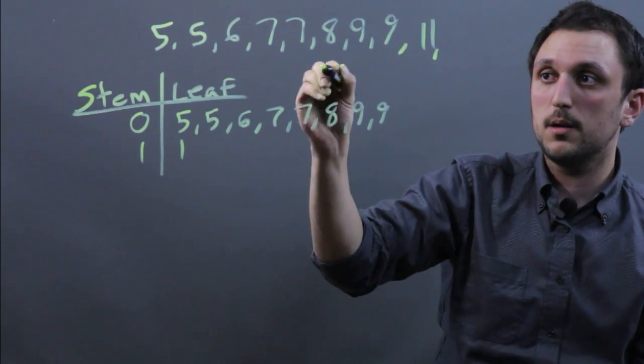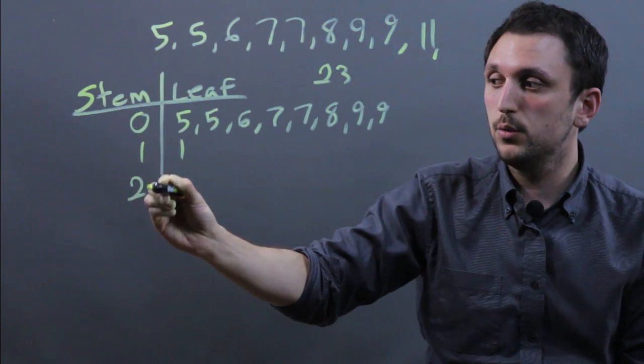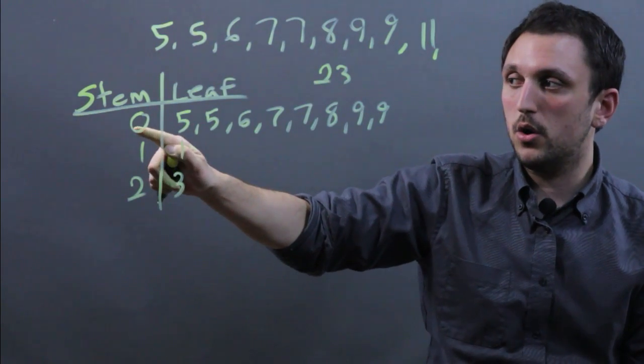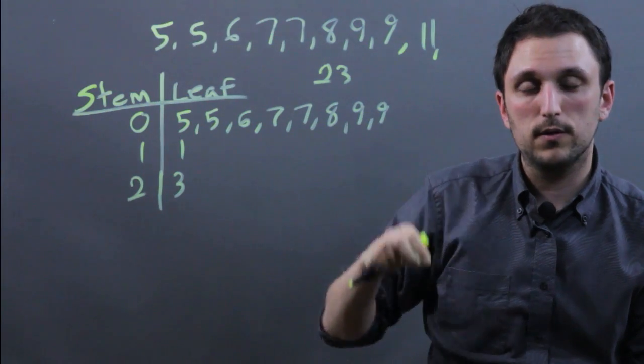If we had a 23, then we'd add a 2 and a 3. But because we're only using single digits, they're all in the 0 stem and the actual numbers in the leaf.